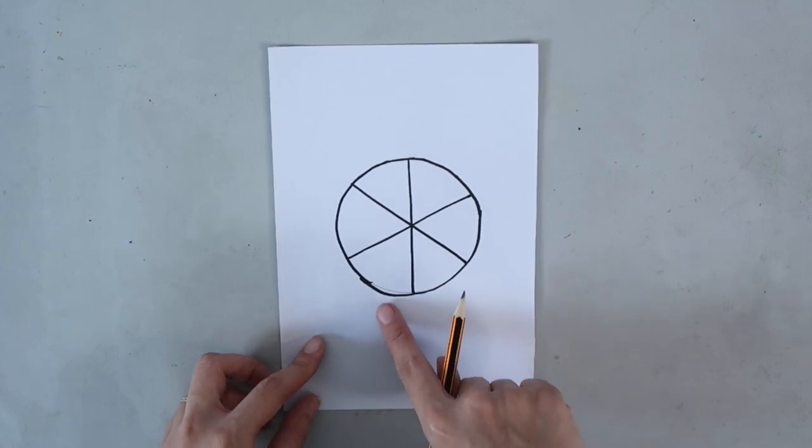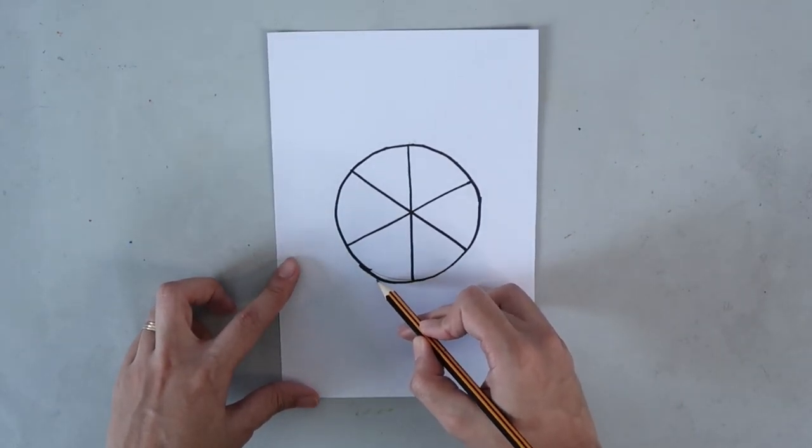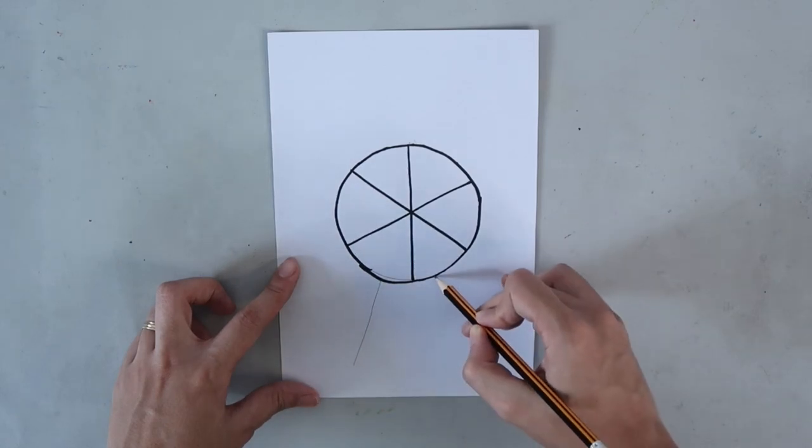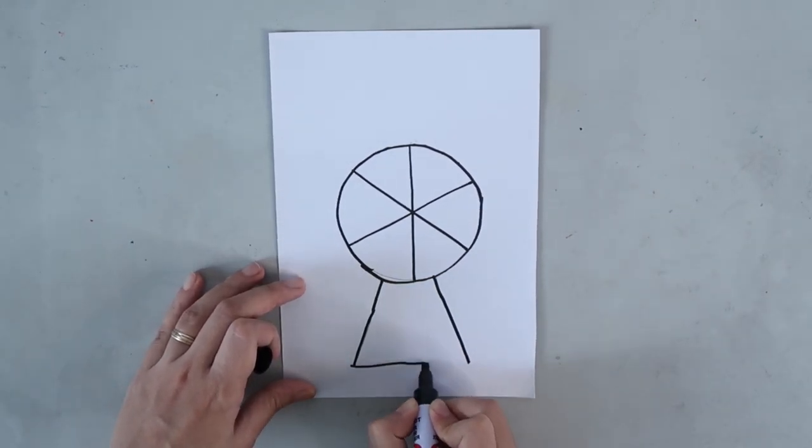Next, we're going to draw the person holding the umbrella, which is you! Now, if you're a girl, you can draw a dress using diagonal lines and close it with a horizontal line.